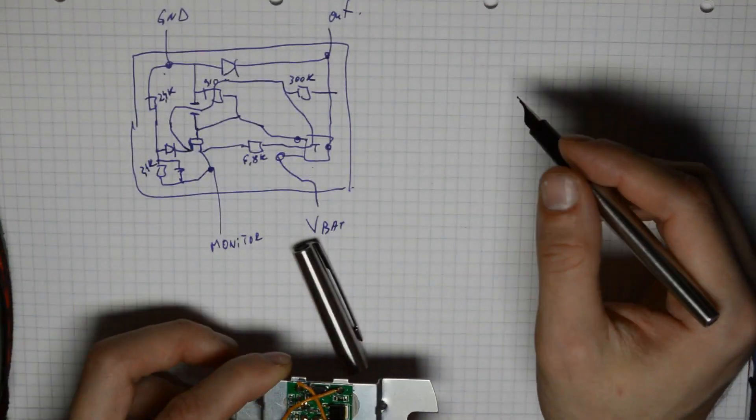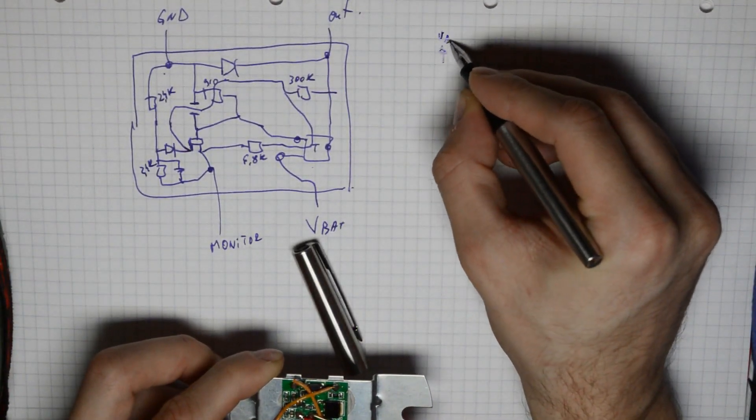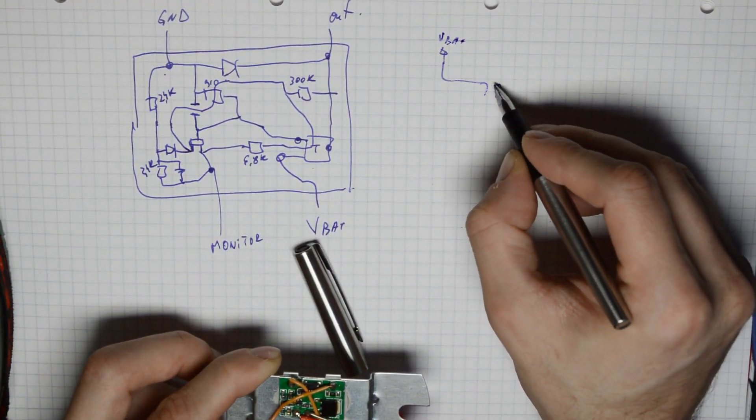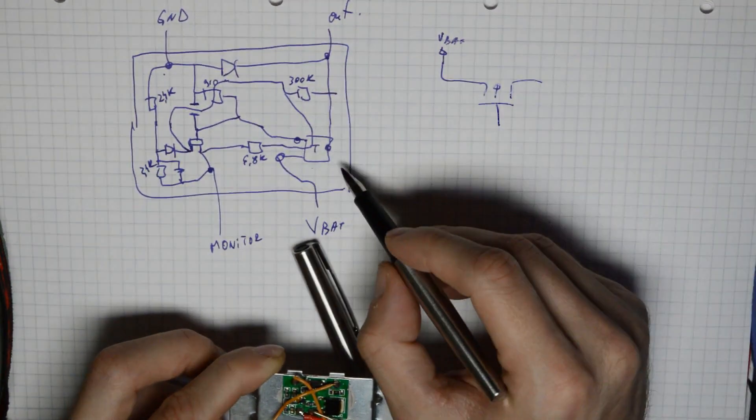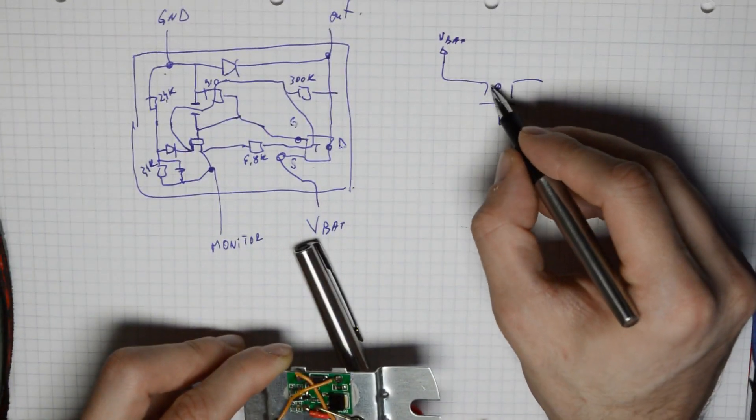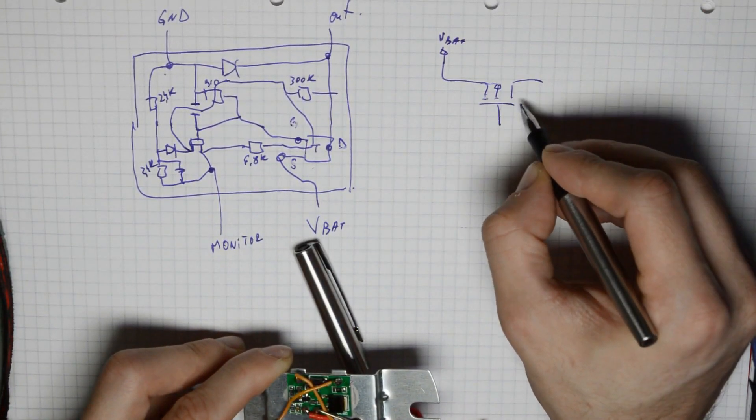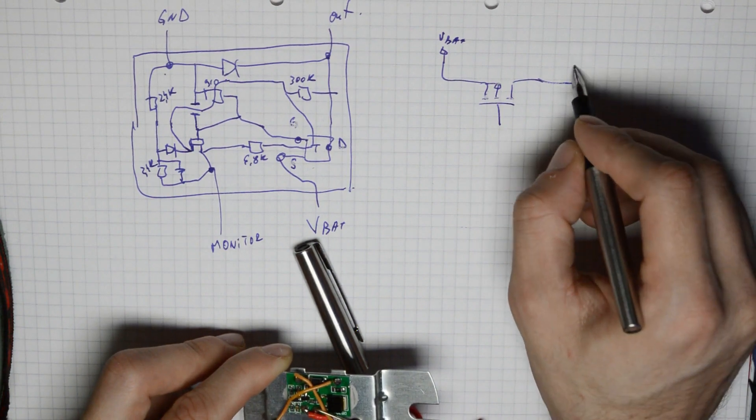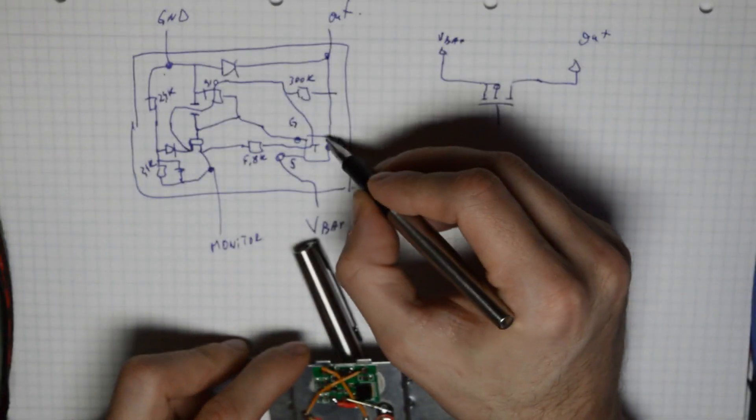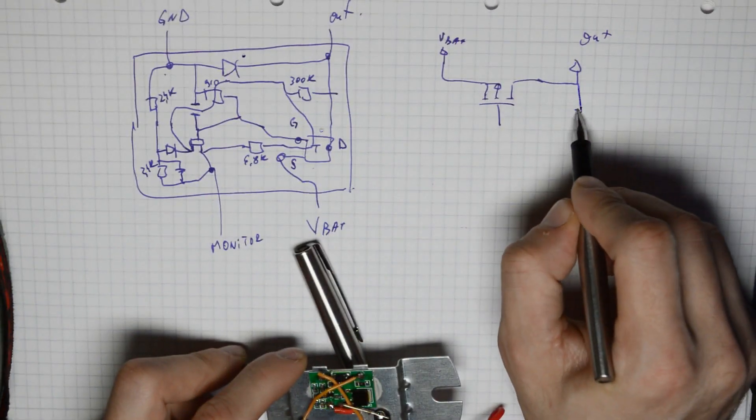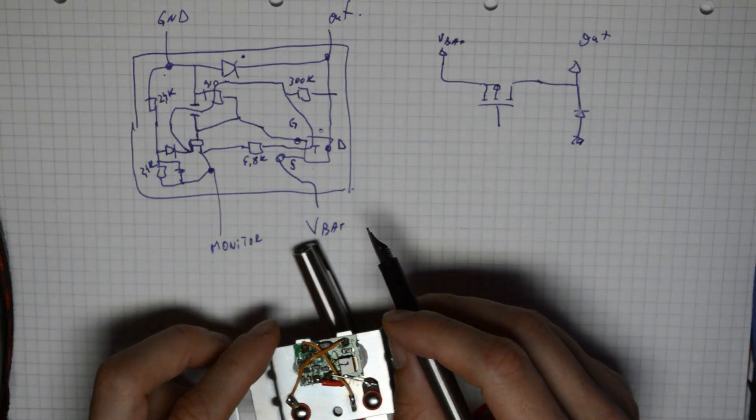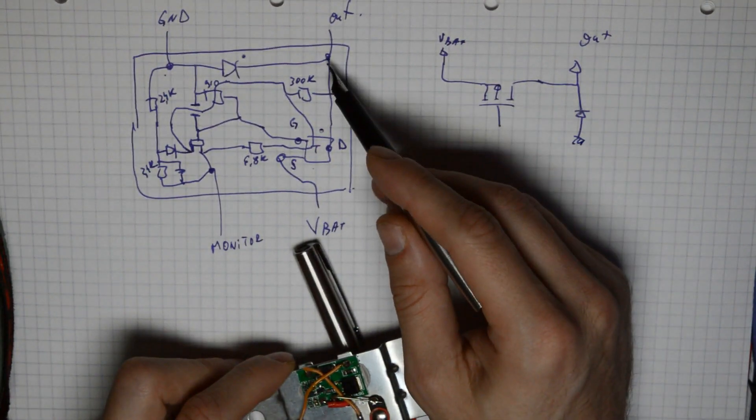So we've got our power transistor, most probably a P-channel MOSFET. This is the source, drain, and gate. So we've got our source, the drain is connected directly to the output. We have our protection diode between the output and ground in case it's reversely connected or we got any sort of inductive spikes coming back from our coil.